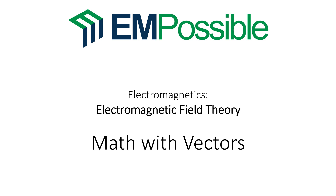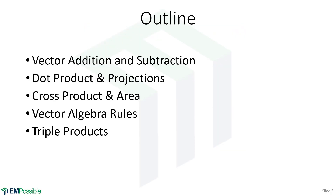Math with vectors. We'll talk about vector addition and subtraction, and then the more interesting topic of vector multiplication, where there's dot products and cross products. Dot products are all about projections, and cross products are all about area and calculating vectors that are perpendicular. We'll go through some vector algebra rules, and then very quickly we'll end with triple products.